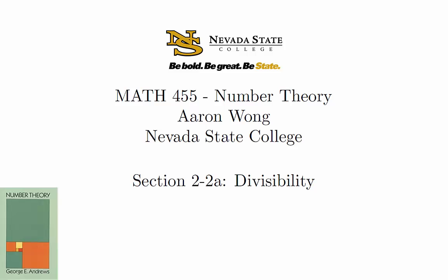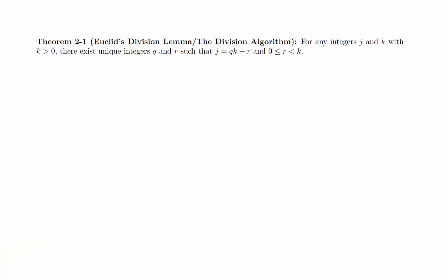Before we begin, let's take a moment to review the division algorithm, which this book calls Euclid's division lemma. Theorem: For any integers j and k with k greater than 0, there exist unique integers q and r such that j equals q times k plus r, and 0 is less than or equal to r is less than k.